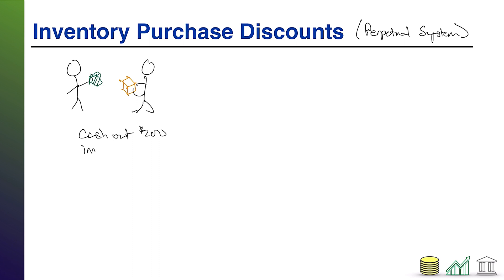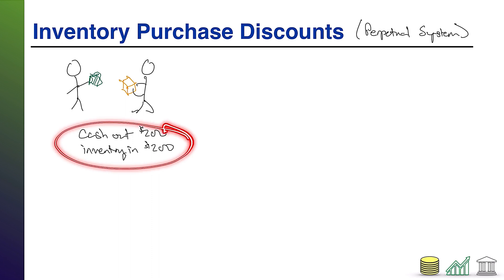Let's say we spend $200 on this inventory. We get $200 worth of inventory in — because what we pay for that inventory is the value of that inventory on our balance sheet. Notice this is just a swap of assets: we gave up one asset, cash, and got another asset in its place, inventory, at equal value. It doesn't change the overall value of our company.